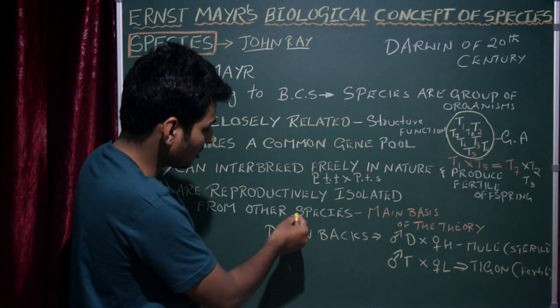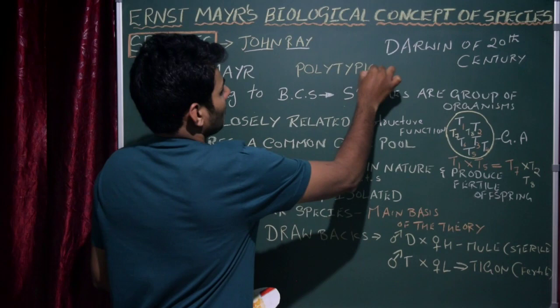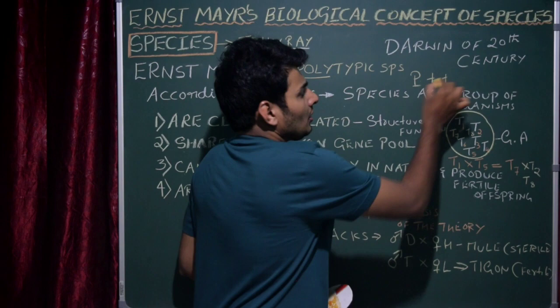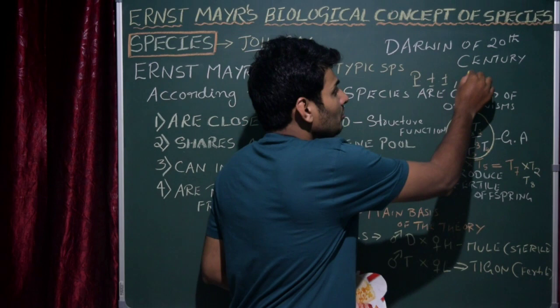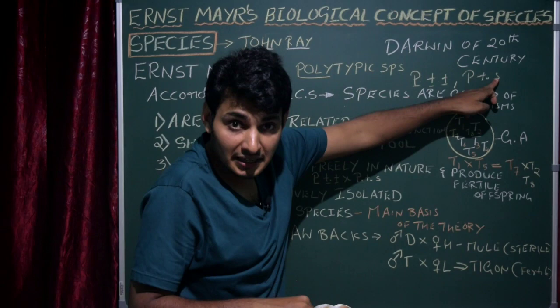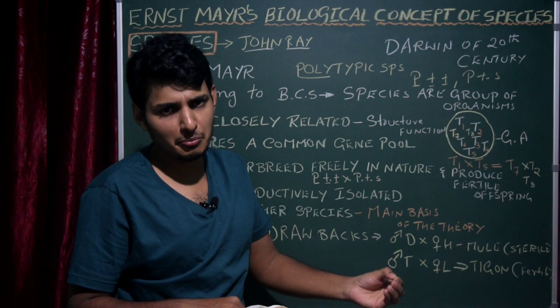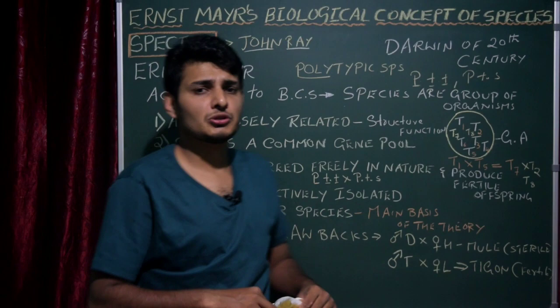Finally, polytypic species: 'poly' means many. If a species has subspecies, it is called polytypic. For example, Panthera tigris tigris (Indian tiger) and Panthera tigris sumitrae (Indonesian tiger) are subspecies of Panthera tigris — making it a polytypic species. In plants, these are called varieties instead of subspecies. Brassica is also a good example of polytypic species. That concludes this video session.